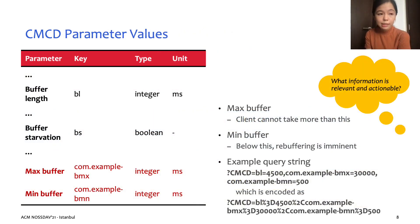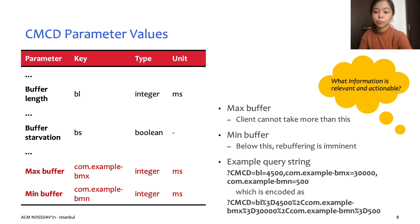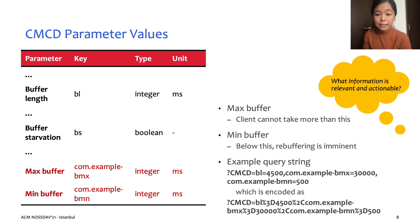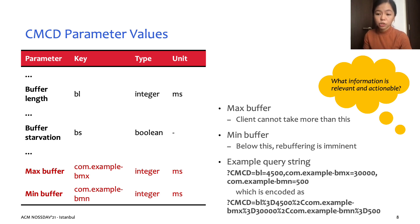CMCD promotes client information sharing with the server, but knowing what information to share is also an important consideration — we need information that is relevant and actionable for the task. Using the example of our target scenario, where we wish to promote better network utilization among concurrently streaming clients, one relevant piece of information would be the buffer status of our clients. Having a healthy buffer is critical in streaming applications, as it reduces the risk of stalls and provides clients more time to download better quality segments. We identified four buffer-related CMCD parameters for our POC system. The first two — buffer length and buffer starvation — are provided in the CTA spec, while the bottom two — min buffer and max buffer — are custom parameters, which are also supported by the spec.